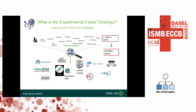The Experimental Factor Ontology, or EFO, is an application ontology that provides a systematic description of many experimental variables available in EBI databases and for projects such as the GWAS catalog. It combines parts of several biomedical ontologies — for example, Uberon for anatomy, ChEBI for chemical compounds, and HPO for phenotypes. Only the terms necessary to link data and provide data searchability for the EBI are included, so the scope of EFO is to support annotation, analysis, and visualization of data handled by many groups at the EBI.